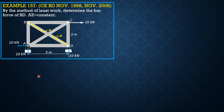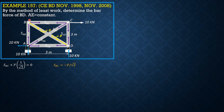We begin at joint B. Summation of forces in X — assume all members in positive tension. SBC plus P times 1 over square root of 2 (the slope of the diagonals) equals zero, so SBC equals negative P over square root of 2. Then summation of forces in Y — downward positive — gives SAB plus P times 1 over square root of 2 equals zero, so SAB is also negative P over square root of 2.